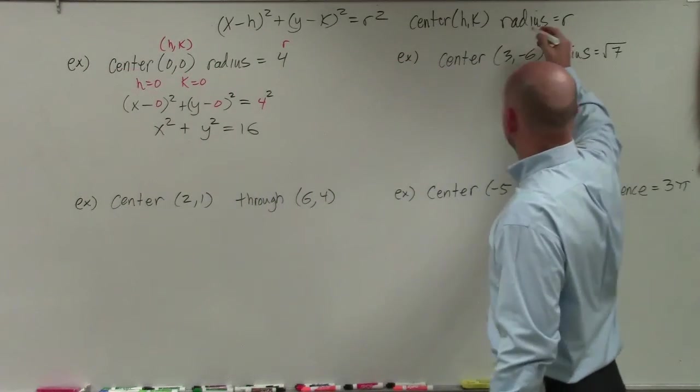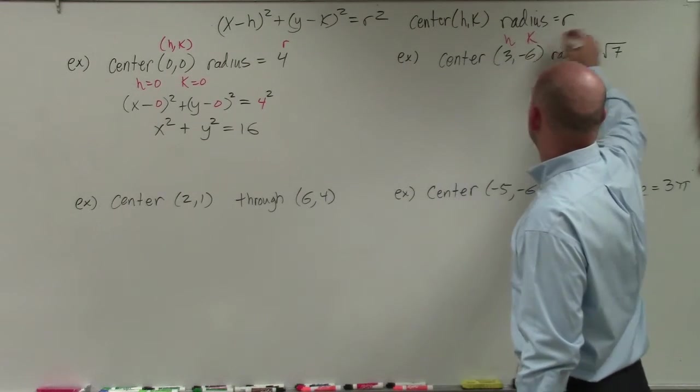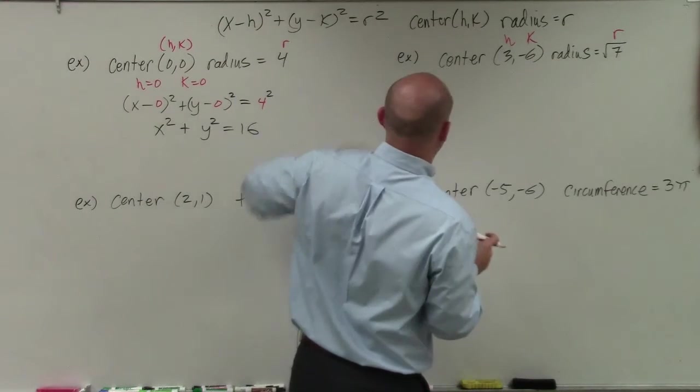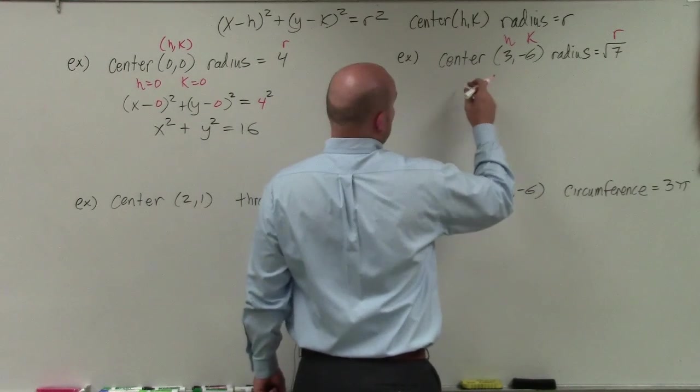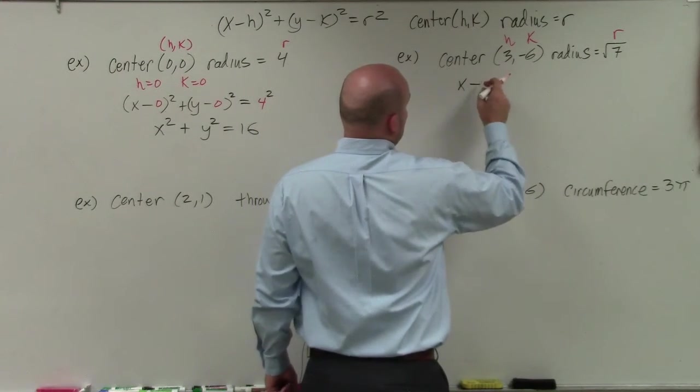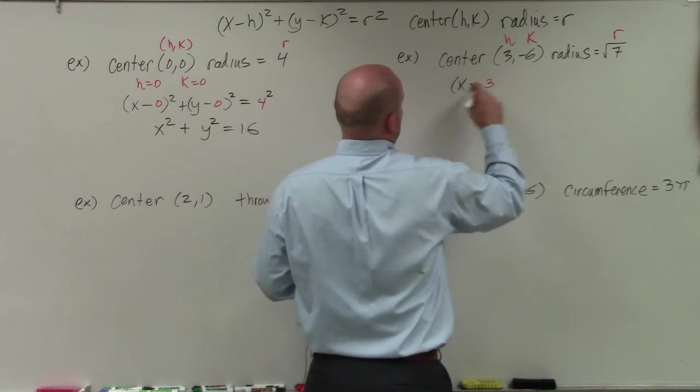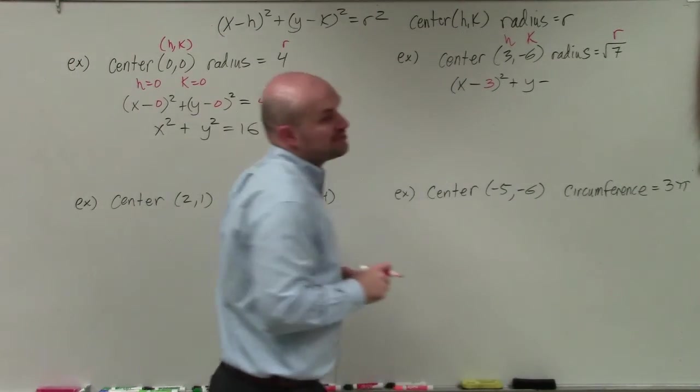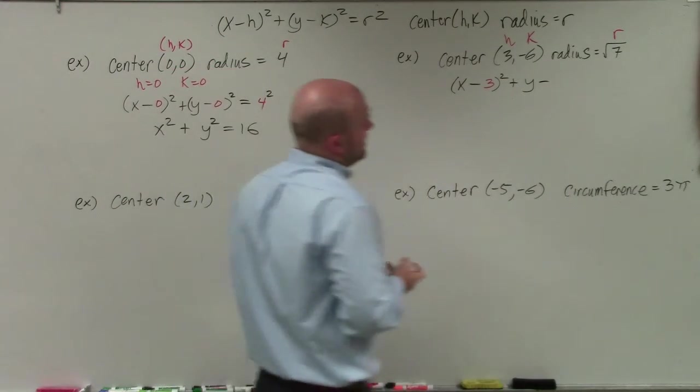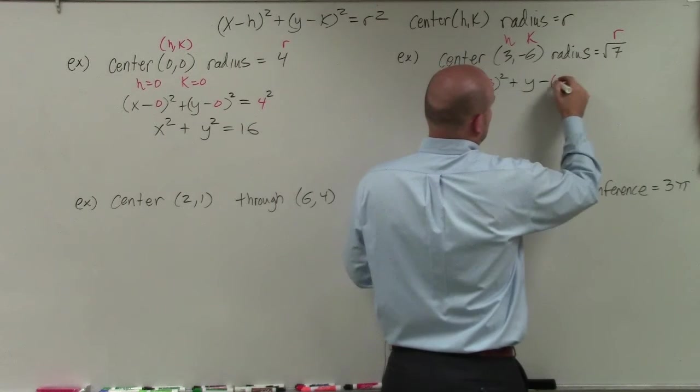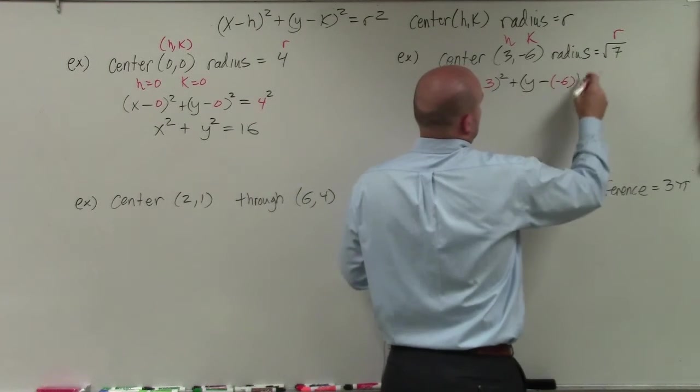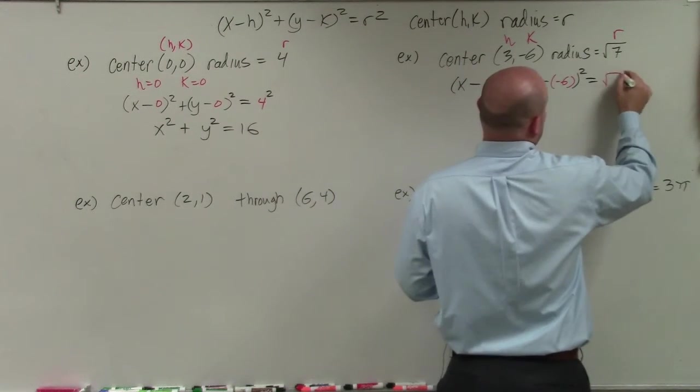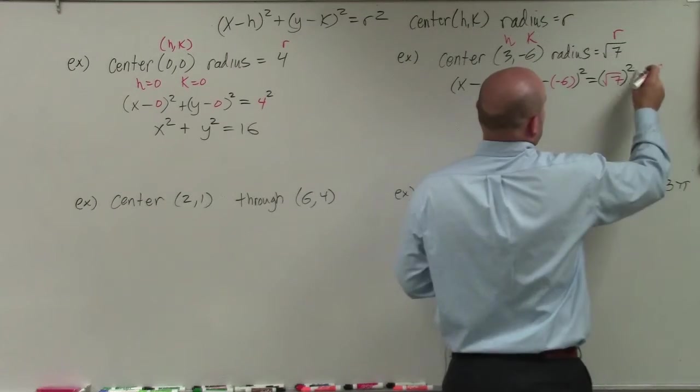In the next example, I'm going to do the same thing. I'm just going to write in h, k, and this is r. And then again, plug in the information into our formula for our circle. So I have x minus 3 squared plus y minus. Now, a lot of times students will get stuck with this one. So what I do is just put it in parentheses. Negative 6 squared equals square root of 7, I'll put that in parentheses again, squared.